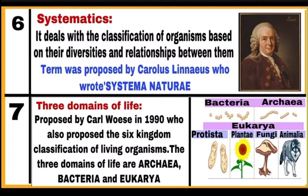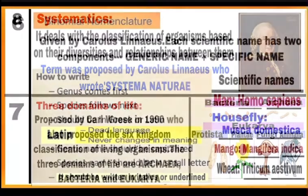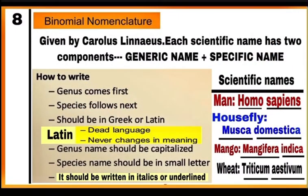Three domains of life: it was proposed by Carl Woese in 1990, who also proposed six-kingdom classification of living organisms. In three domains of life, the kingdom Monera was divided into two domains — Bacteria and Archaea — while the other four kingdoms Protista, Plantae, Fungi and Animalia were included in the third domain Eukarya. Thus in total there are six kingdoms in three domains of life, and these three domains are Archaea, Bacteria and Eukarya, as shown in the given ray diagram.